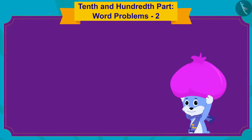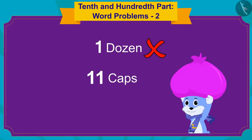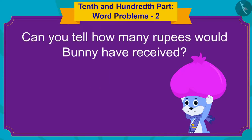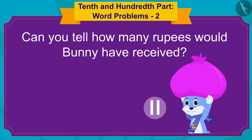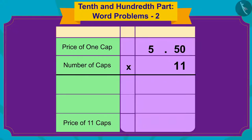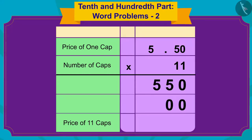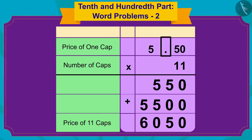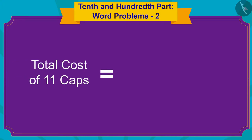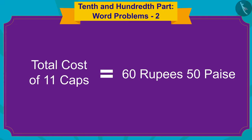Children, if Bunny had sold only 11 caps instead of a dozen caps, can you tell how many rupees would Bunny have received? You can stop the video and find the answer. We will first multiply 5.50 with 11 in this way. And now, because there are two digits after the decimal point in 5.50, we will write the decimal point in the answer in this way. The total cost of 11 caps would be 60 rupees and 50 paise.